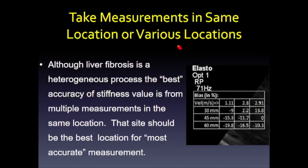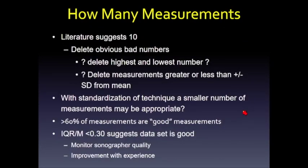We take 10 measurements in the same location rather than various locations, because the attenuation of the ARFI pulse and its bandwidth cause different measurements at different locations. If you want measurements from different locations, you should take 10 measurements at each location. Vendors are developing new quality measures — maps that indicate the best places within an image to take or ignore measurements — which will be very helpful.